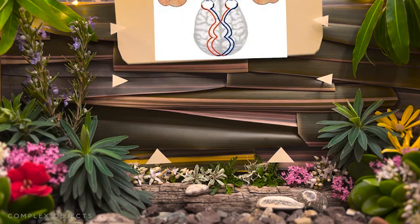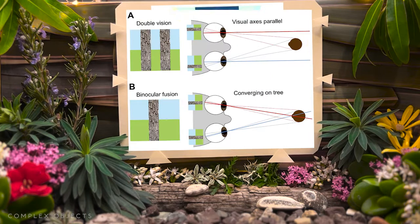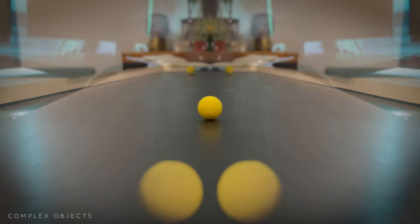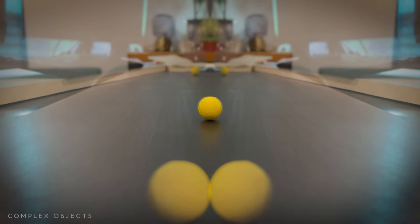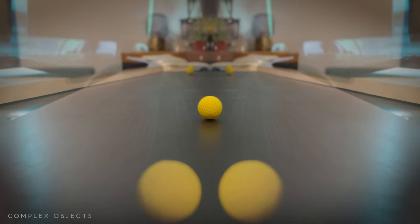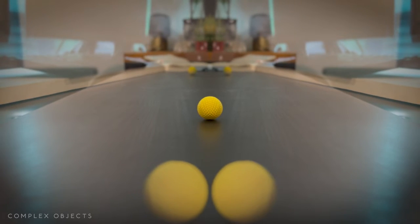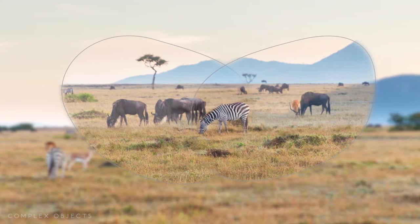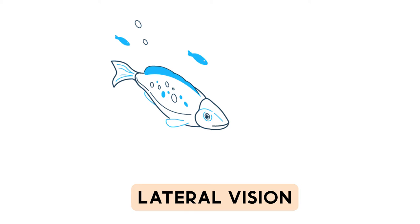Fixing your eyes on a target is a large part of how we perceive depth. Depth perception, or stereopsis, works because when you focus on an object, everything in front of and behind it goes into double vision, and our brain uses that information as a signal of depth. Put your hands like this and look at one — the other becomes double, and the wall behind is double too. Almost all predators do this; it helps them see far out into the distance so they can stalk and hone in on something.